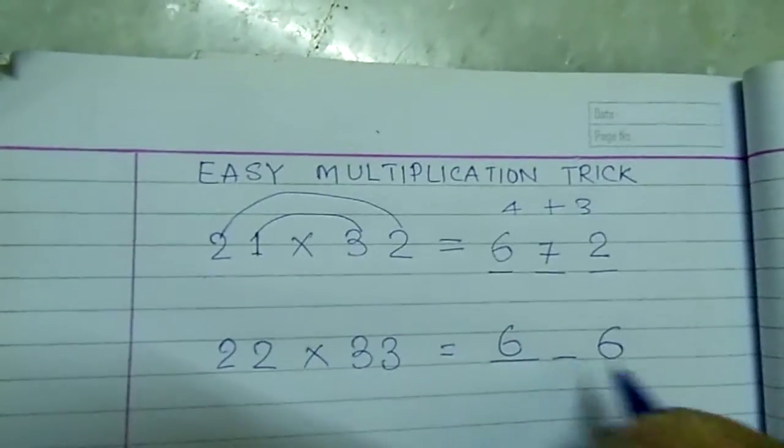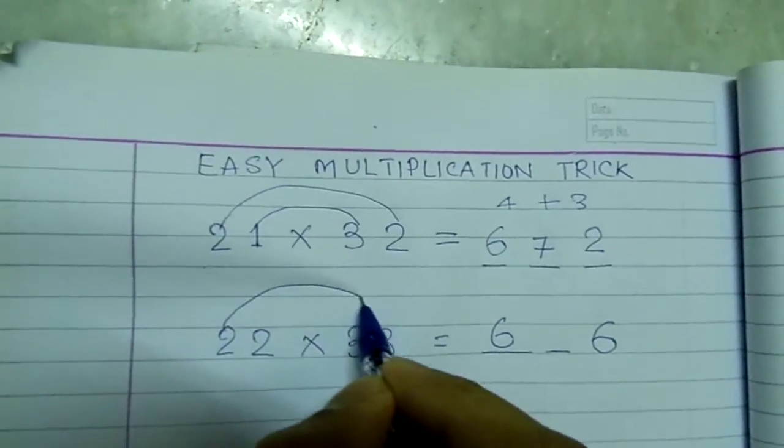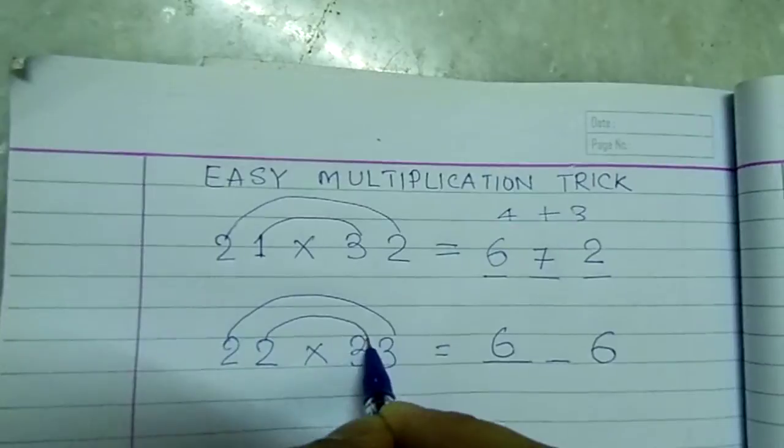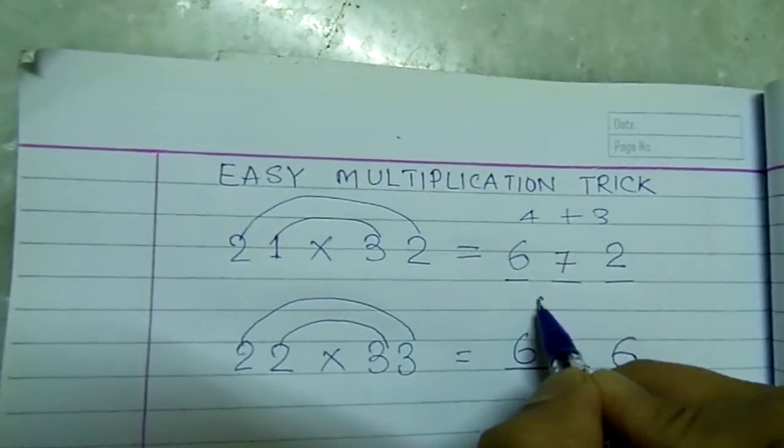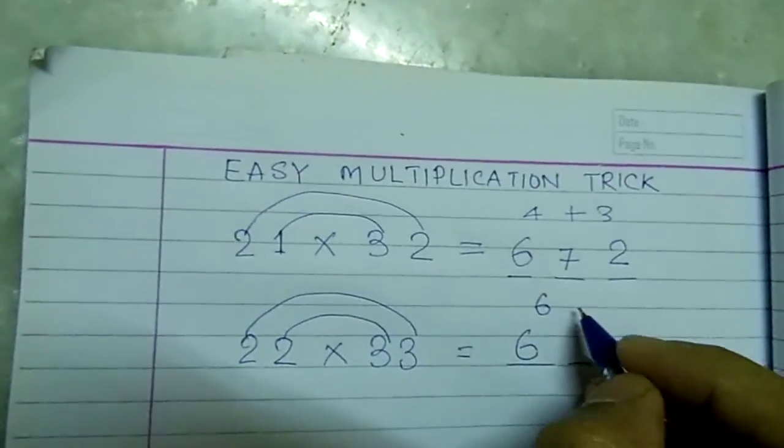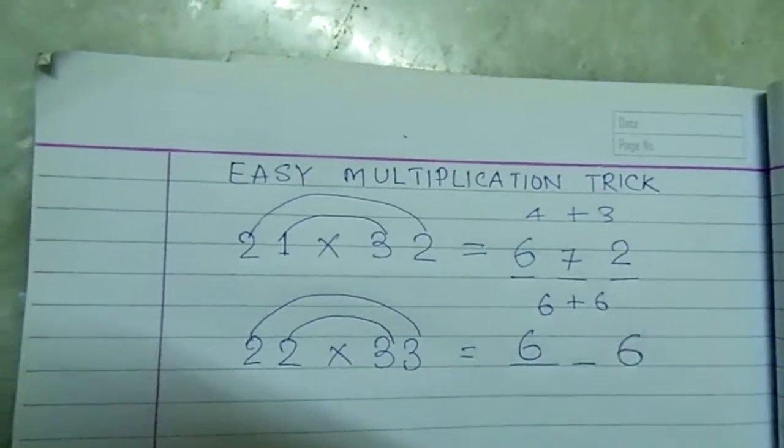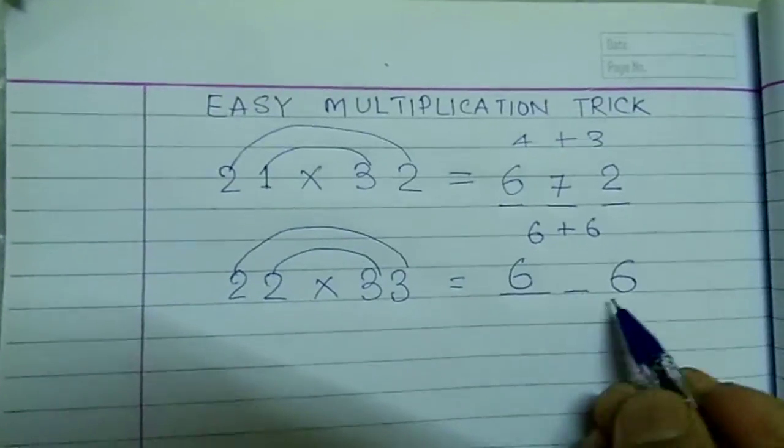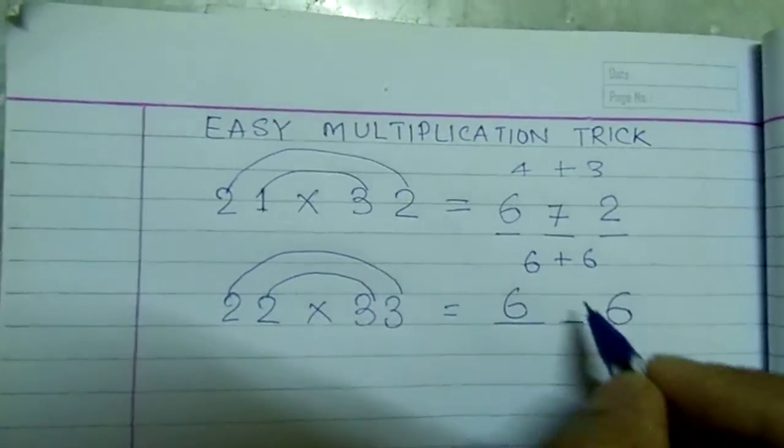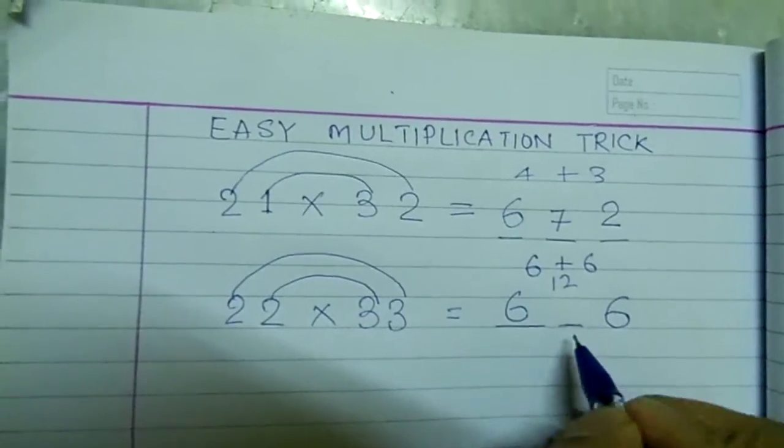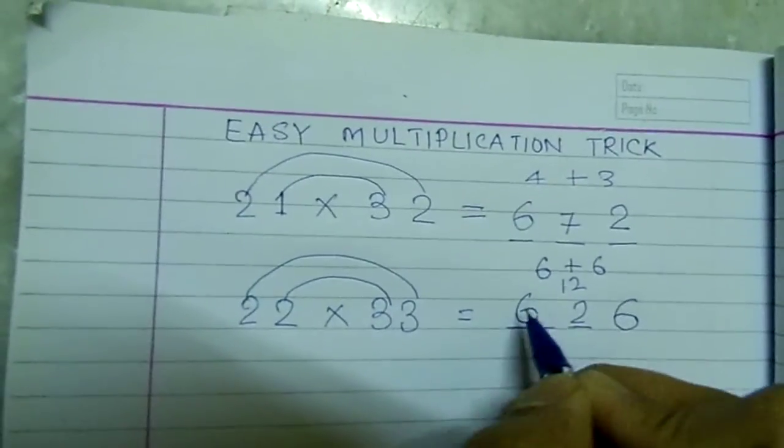To get the middle digit, again we will do the rainbow multiplication and add it. 3 is to 2 is equal to 6. 3 is to 2 is equal to 6. Now we are getting 12. We have one space. We cannot write 12 here. What we will do? We will write 2 and carry this one to here.